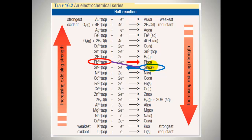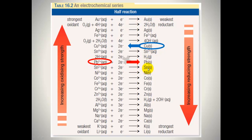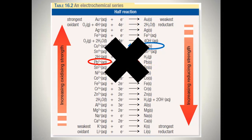Remember, the bottom reaction — the oxidation reaction — must occur in a backwards direction. If however we have a situation such as copper solid and lead ions, this reaction cannot occur because the reductant is not underneath the oxidant on the right hand side. So no reaction will take place.